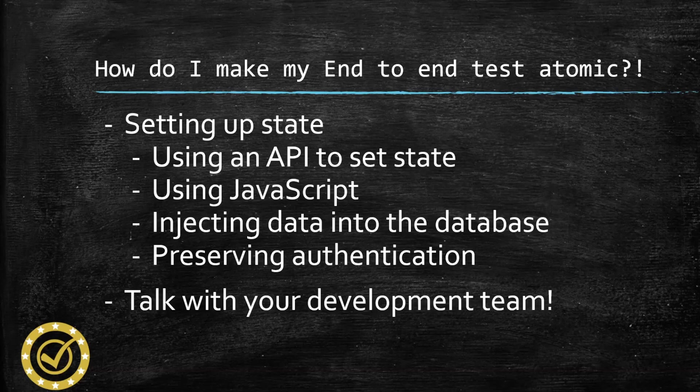If none of these options are possible and you're still stuck on making your tests atomic, the biggest thing is to communicate with your team. Ask them for ideas. The point of having a solid, quality product is ensuring your development team have made an application that's easy to test, and that quality is a shared responsibility. If you're working with experienced developers, they're more than likely to be familiar with atomic testing principles from things like unit testing, and they can offer advice on this.